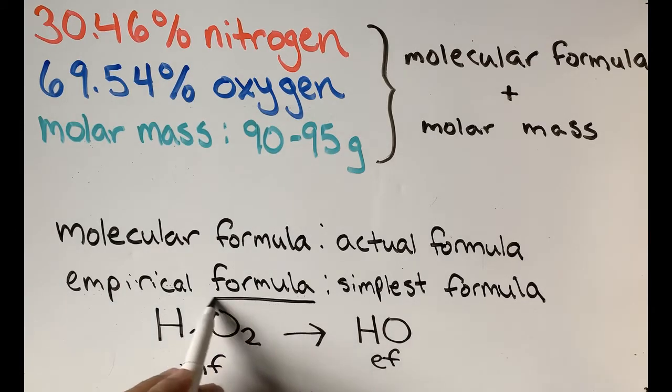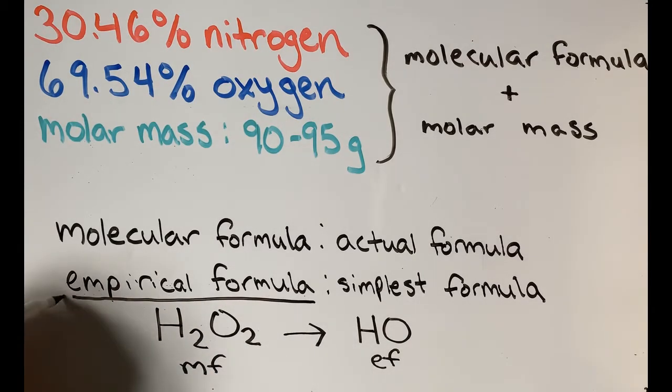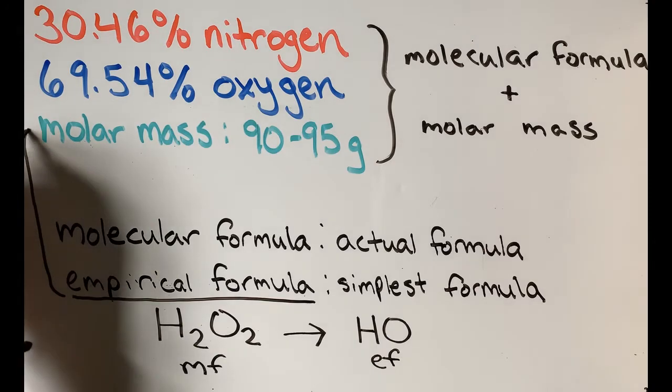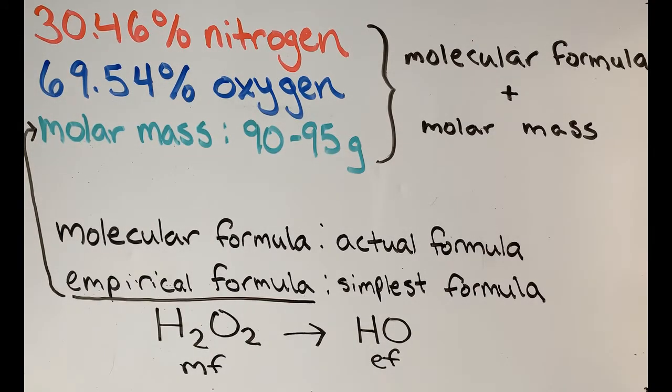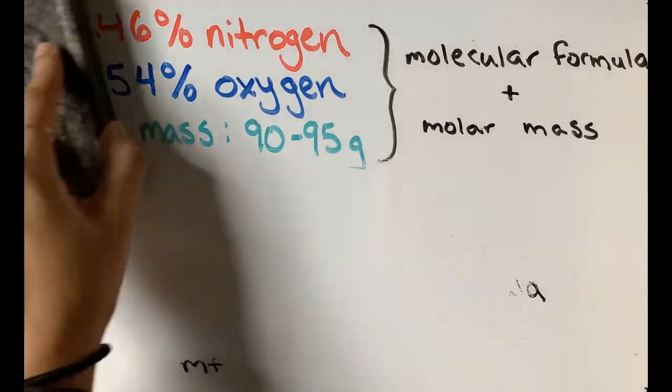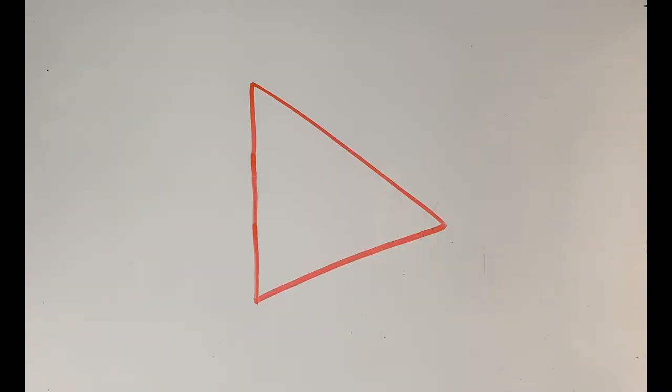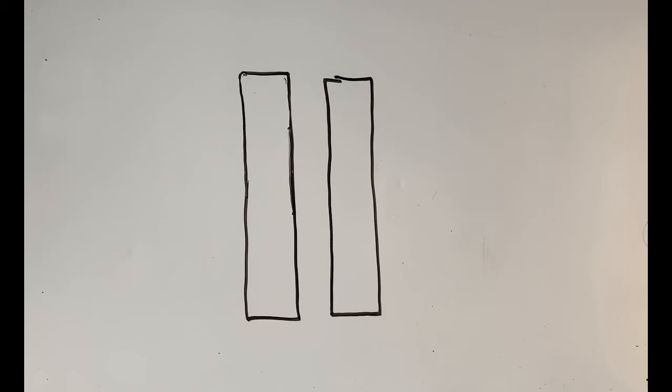So, to find the molecular formula, first find the empirical formula, and then multiply it by the needed proportion so that it fits the weight range that we need it to be in. Now pause this video and try to solve this problem. Unpause when you're ready to check your answer.